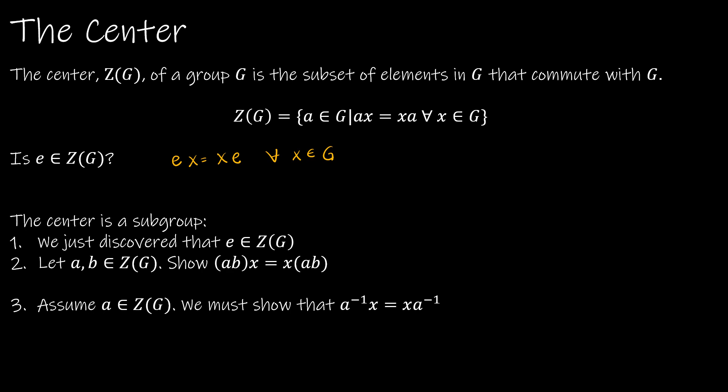So is the center a subgroup? Yes, it is. So we just discovered that the identity is an element of Z(G). Now, we're going to let A and B be in the center and show that ABX = XAB. So that's fairly straightforward, because ABX, because A and B are in the center, I know that BX = XB, so I can call that AXB, and because A is in the center, then AX = XA. And so therefore, I can say that ABX = XAB. So that was fairly straightforward.